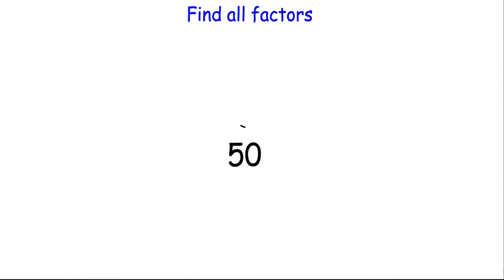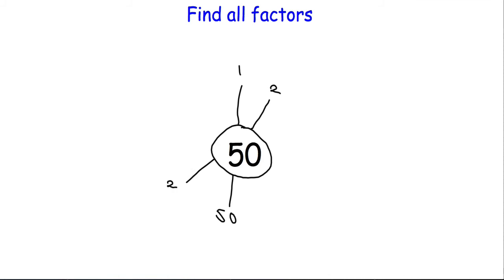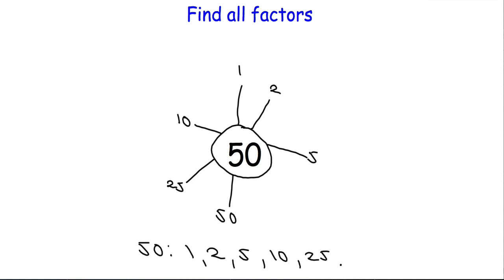One more example: find all the factors of 50 using a factor bubble. Starting with 1: 1 times 50 gives 50. The number ends in 0, so it's even — 2 will go in: 2 times 25. Does 3 work? No. Does 4 work? No. Does 5 work? Yes — 5 times 10 is 50. That's all the factors of 50. Written as a list: 1, 2, 5, 10, 25, and 50.